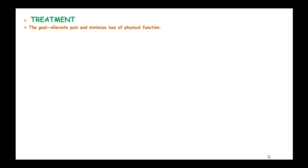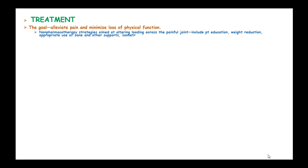The goal of treatment is to alleviate pain and minimize the loss of physical function. Non-pharmacotherapeutic strategies aimed at altering loading across the painful joint include patient education, weight reduction, appropriate use of a cane or other supports, isometric exercise to strengthen muscles around the affected joints, and bracing or orthotics to correct malalignment.